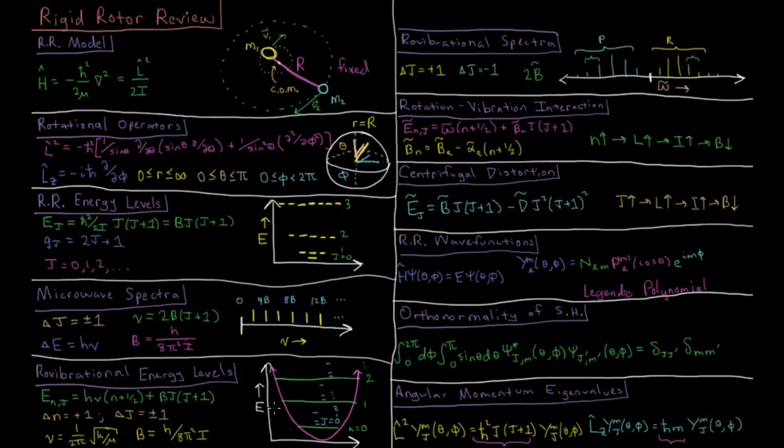You get an energy diagram which looks like this where you have the farther spaced vibrational levels and the closer spaced rotational levels, evenly spaced for vibrations and quadratically spaced for rotations.